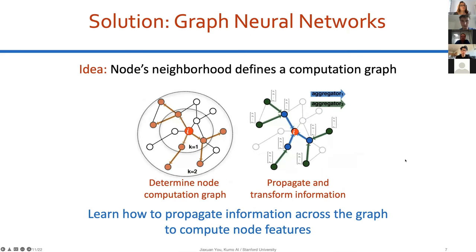Our solution is the idea of graph neural networks, which is the most popular way to instantiate a deep graph encoder. The idea is to let node neighborhood structure define a computational graph. For example, to encode node i, we define the computational graph based on one-hop, two-hop, up to k-hop neighborhood structure, then propagate and transform information along this computational graph to compute the node embeddings. The key idea of GNN is to learn how to propagate information across the graph to compute node features.